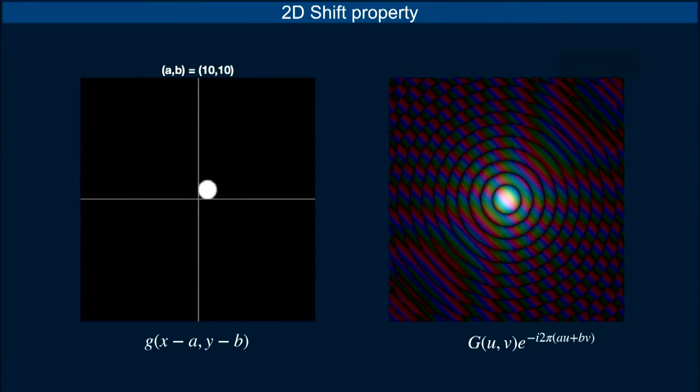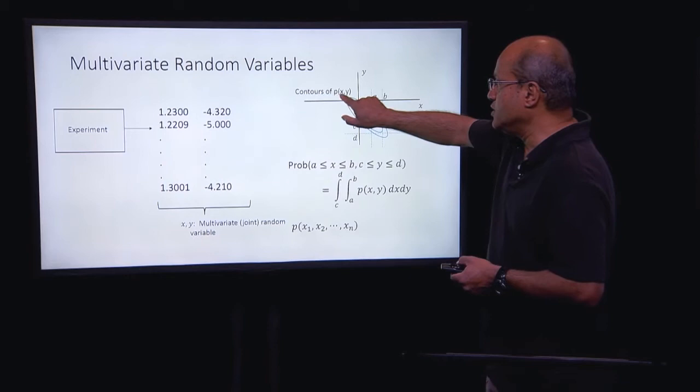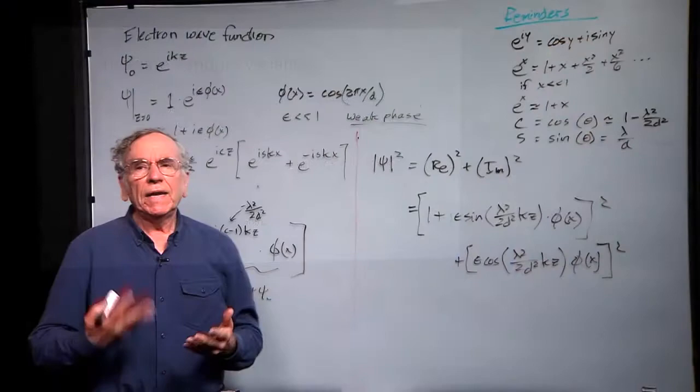And here we go. Function on the plane. And I'm going to denote that as p(x, y). And these are the contours of that function.